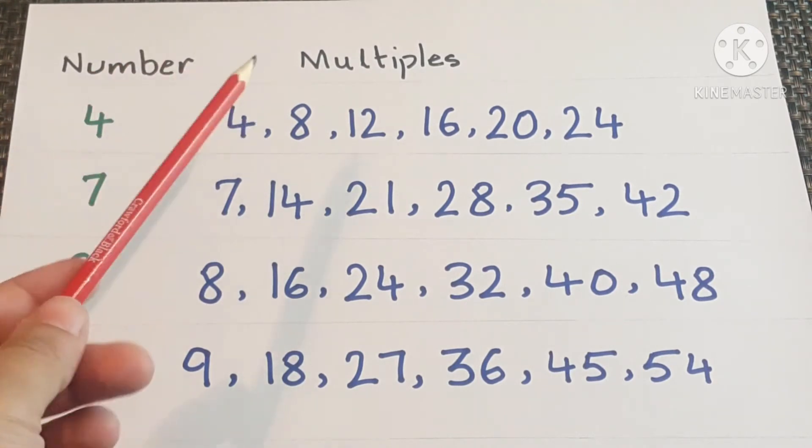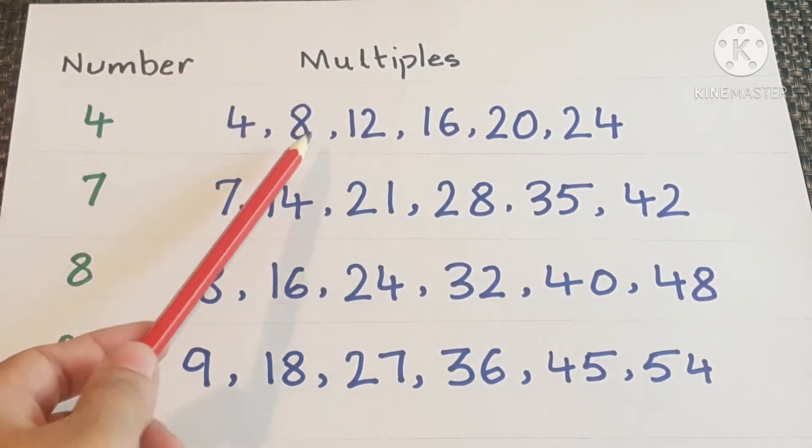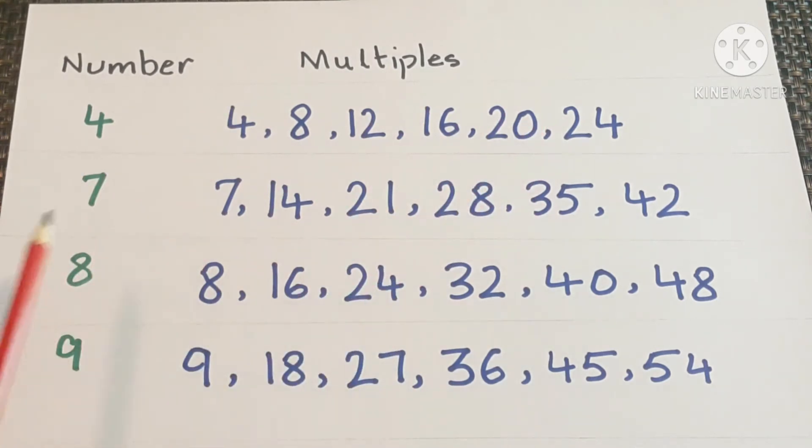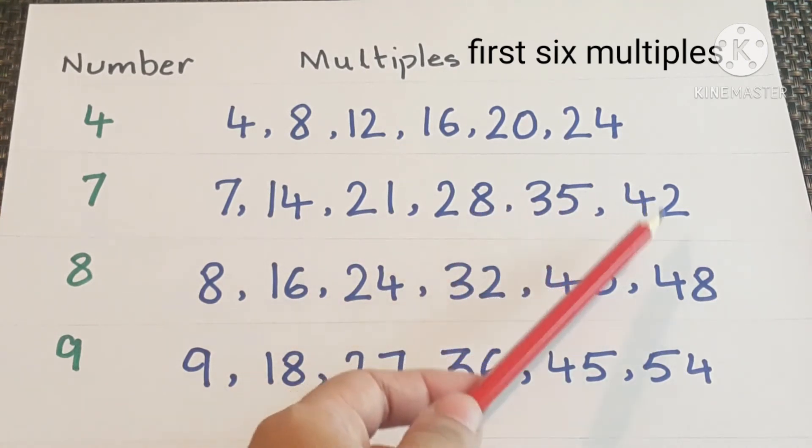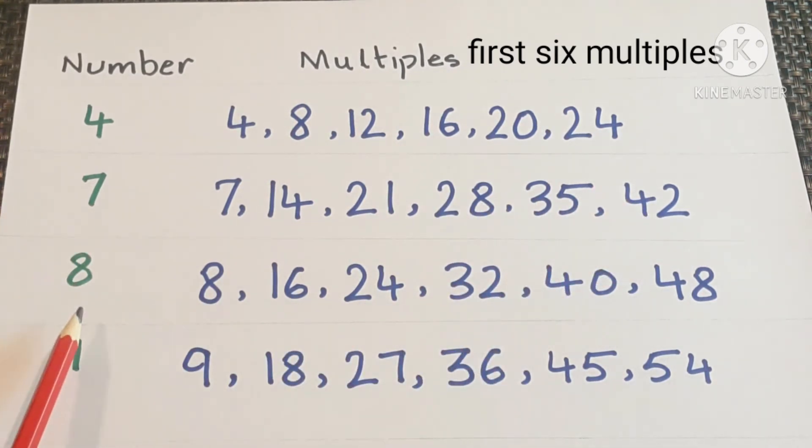4. Multiples of 4. 4, 8, 12, 16, 20, 24. Number is 7 and multiples are 7, 14, 21, 28, 35, 42. Number is 8.